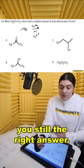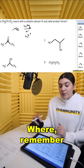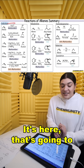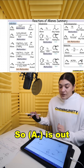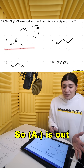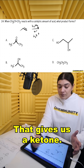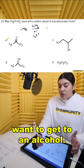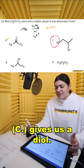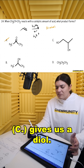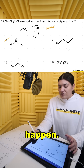Whichever one you use will still give you the right answer. Remember, this reaction leads to an alcohol. So A is out because that's not an alcohol — that gives us a ketone. We want to get to an alcohol. C gives us a diol, which is two alcohols. We don't need two, so that's not going to happen.